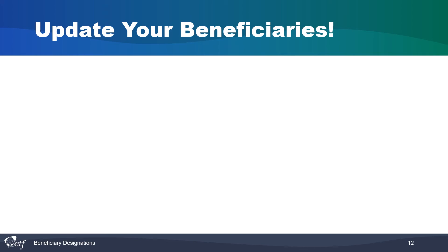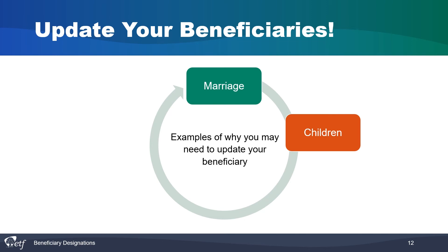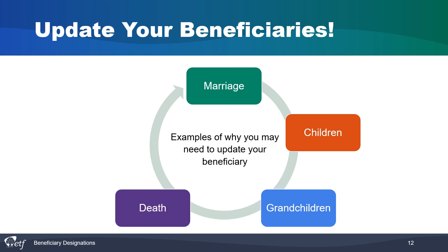Your beneficiary information does not automatically change when a life event occurs. You'll need to fill out a new form and send it to ETF each time a change must be made. Some examples of life events that may prompt an update include marriage — you may want to add your spouse as a beneficiary; children you may have or adopt; grandchildren; a family member's death, which could alter the order of your designation; and divorce — your ex-spouse is not automatically removed, so you will have to update the form to remove them.